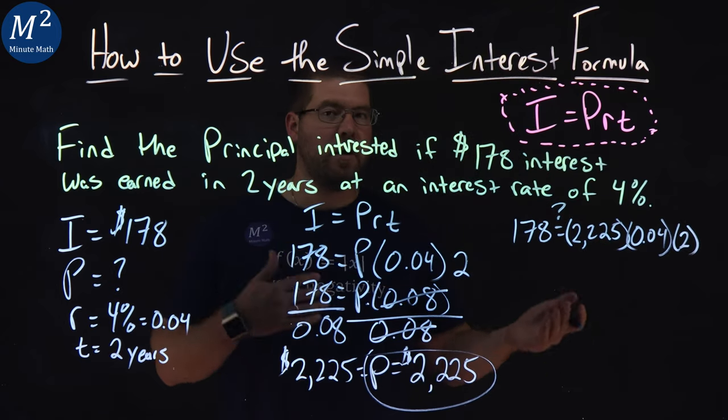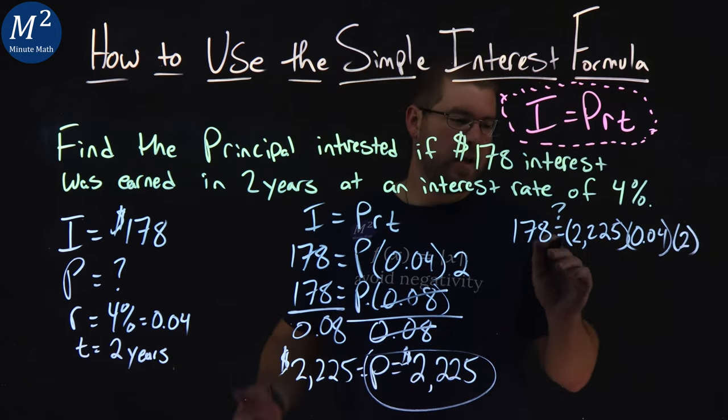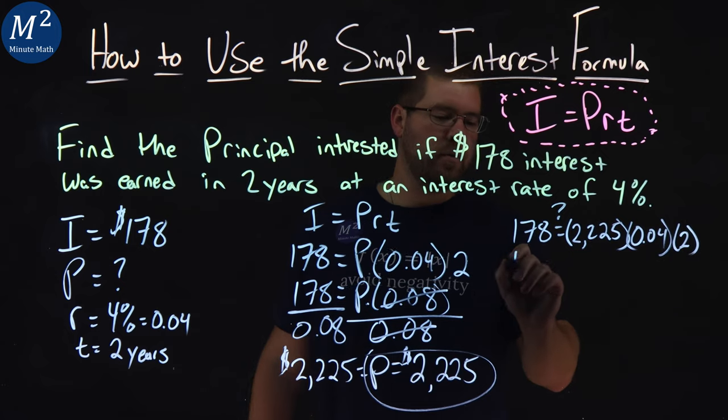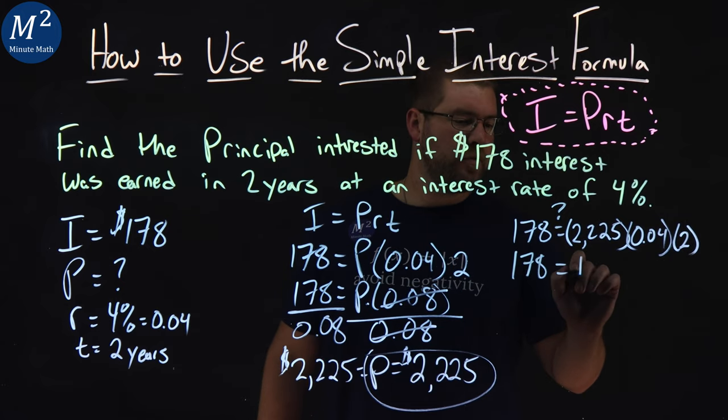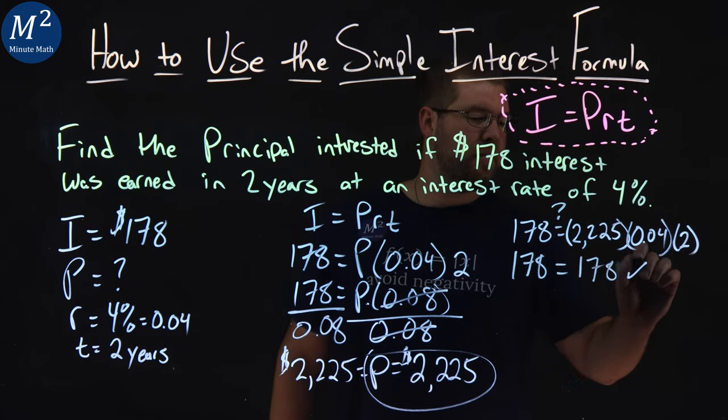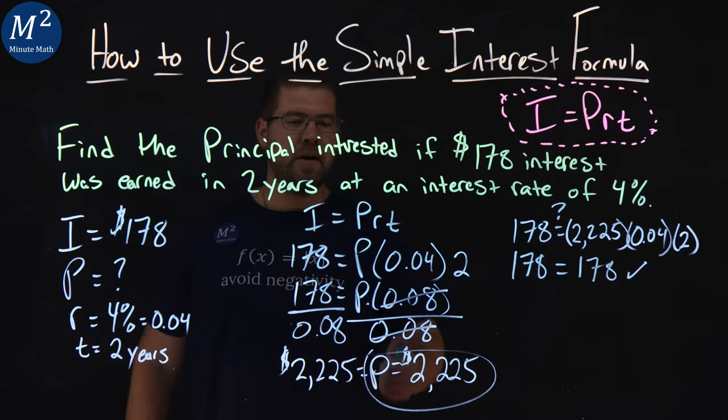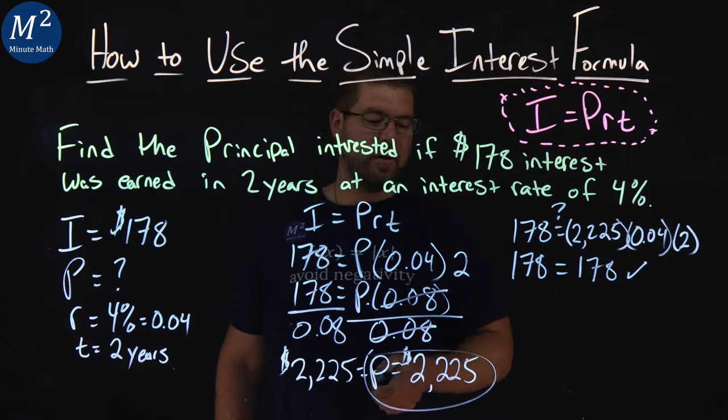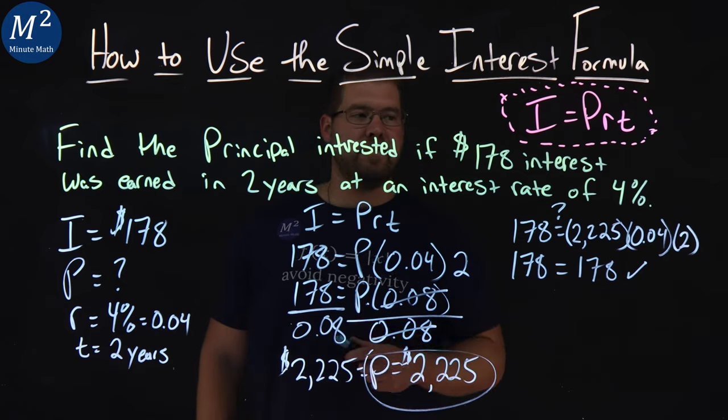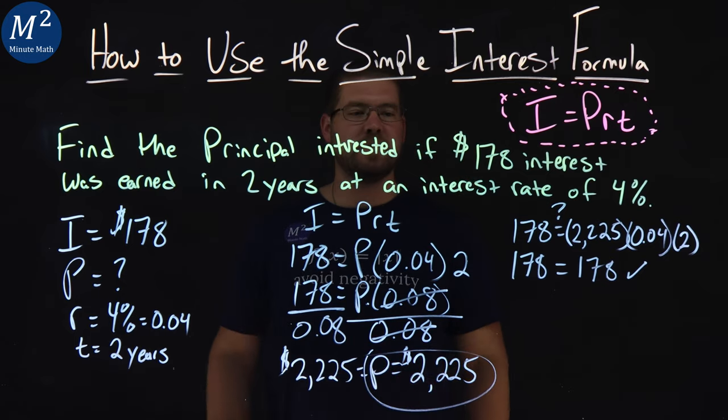And if the left-hand side and right-hand side are equal, we're good, and they do multiply out to be equal. $178 equals $178. Confirming that the principal invested was $2,225, which gave us $178 interest earned over two years at an interest rate of 4%.